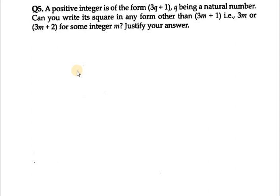Hello everyone, let's start with question number 5. It says a positive integer is of the form 3q plus 1, q being a natural number. Can you write its square in any form other than 3m plus 1, that is 3m or 3m plus 2 for some integer m? Justify your answer.